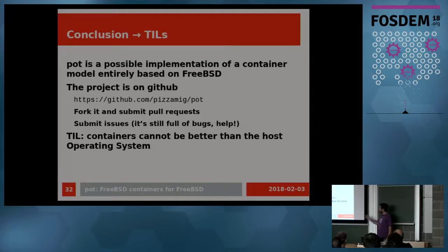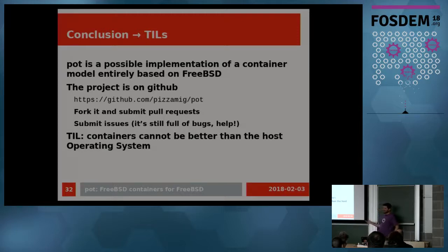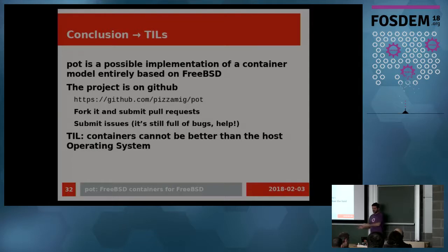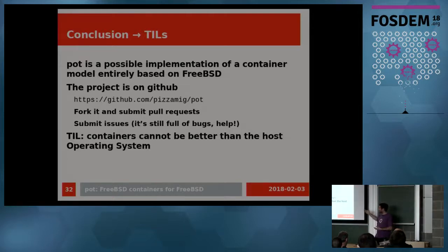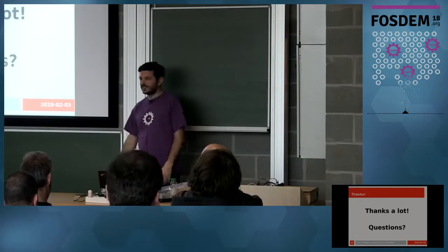Conclusion: the project is on GitHub. Fork it, submit pull requests and issues, please use it and give me feedback. As the only user, I know it's broken. Something really good to remember: containers cannot be better than the operating system that is under the hood. Making some Docker comparisons: Docker does things in a certain way because Linux has those features. FreeBSD is different — you have ZFS datasets, you can do different stuff. I wouldn't say better or worse, I don't care. It's different because the operating system has different peculiarities and features. But you cannot overcome fundamental limits — without jails, you cannot do this kind of containerization.